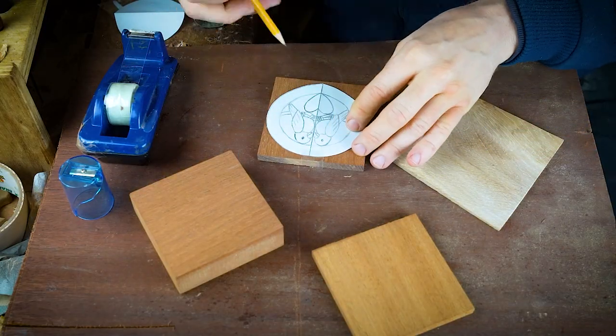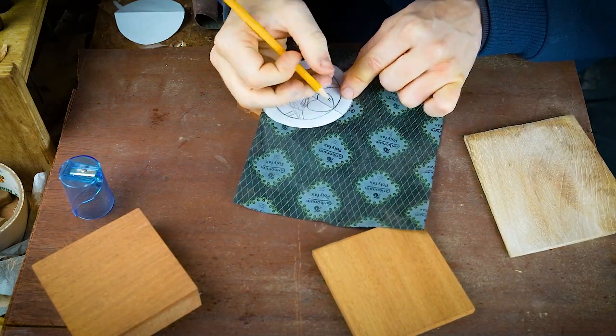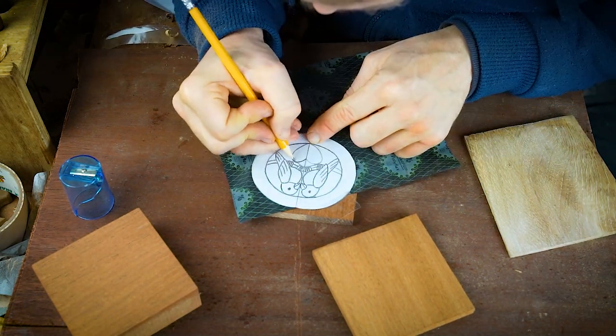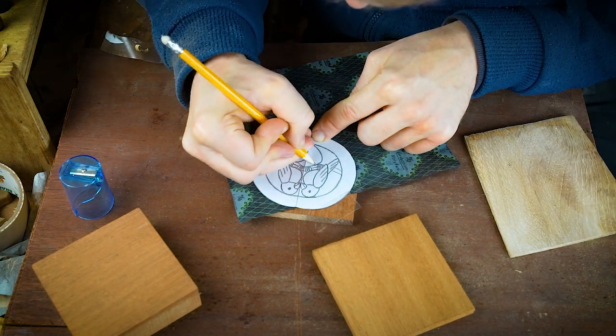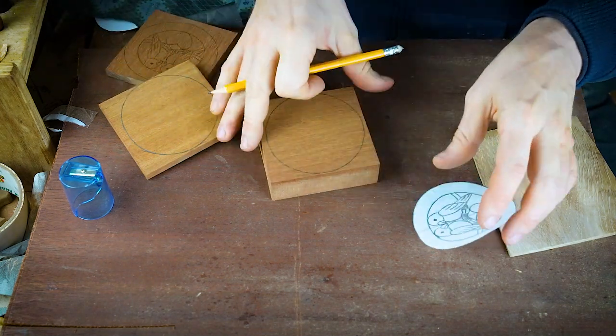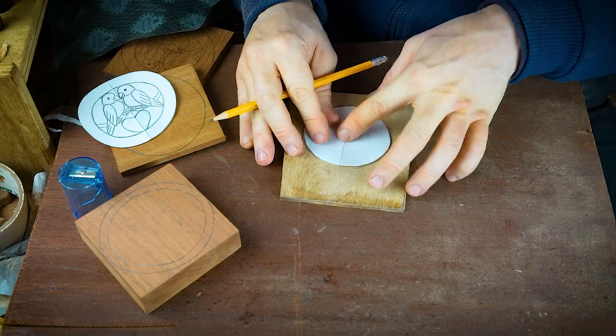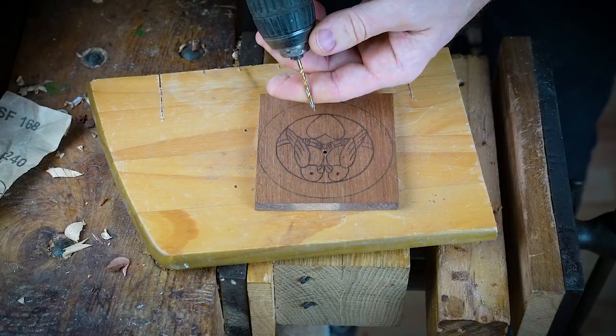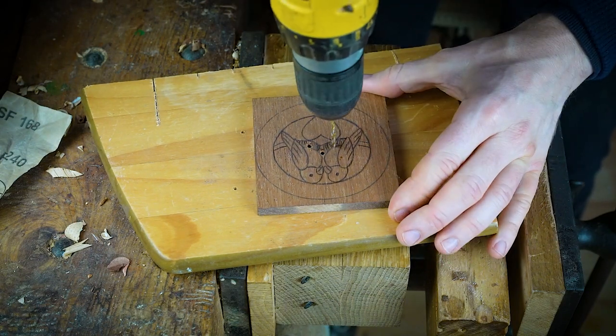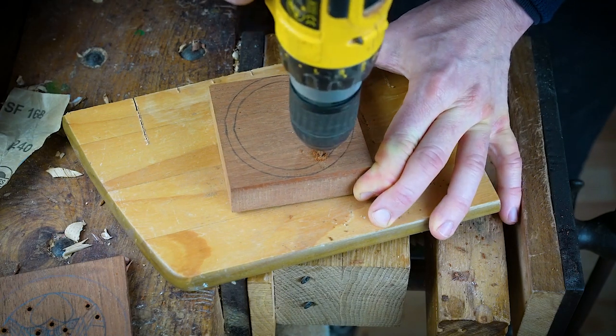On to our final project and this is making a trinket or jewelry box. In another video that we've got coming up we're hoping to demonstrate a few different methods and styles of boxes, but in this example it's a fairly simple box. You'll need a piece of wood for the base and a piece of wood for the top, and then a thicker piece of wood for the main body.